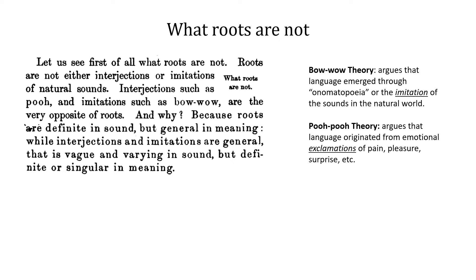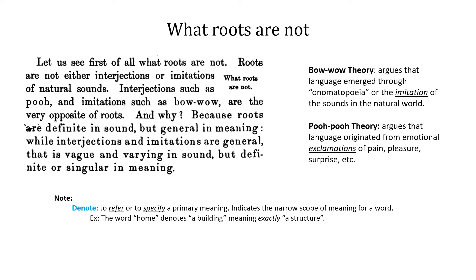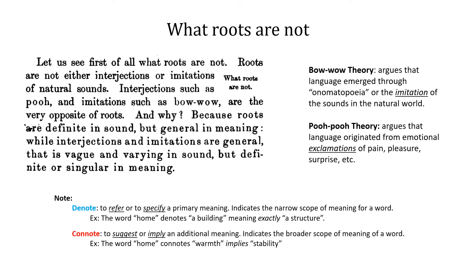I'd like to introduce a subtle distinction in semantics between denote and connote. Words can denote things and words can connote things. Denote means to refer or to specify a primary meaning — it indicates the narrow scope of the meaning of a word. For example, the word home denotes a building. Connote is used to suggest or imply an additional meaning — it indicates a broader scope of meaning. The word home, because it denotes a structure, connotes warmth and implies stability. The words denote and connote map nicely onto the content word and function word dichotomy we established earlier.